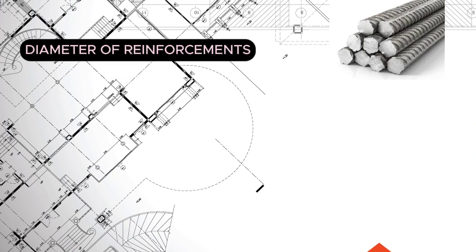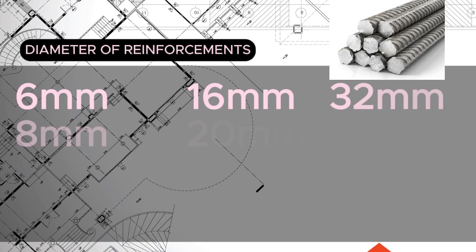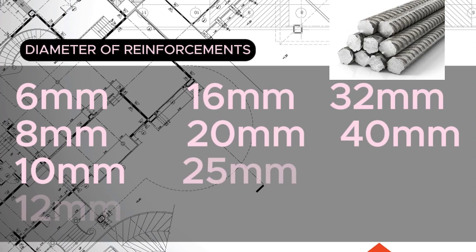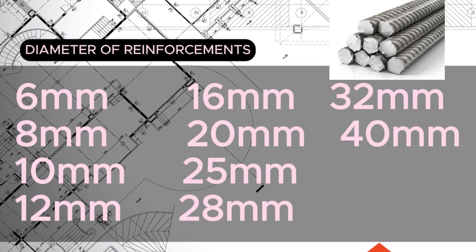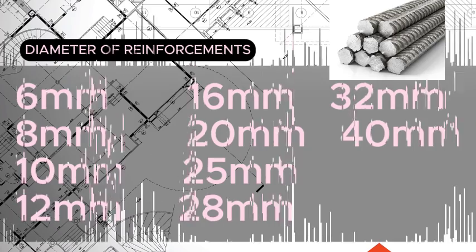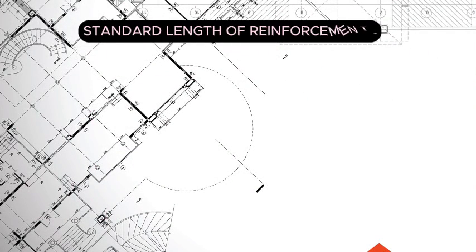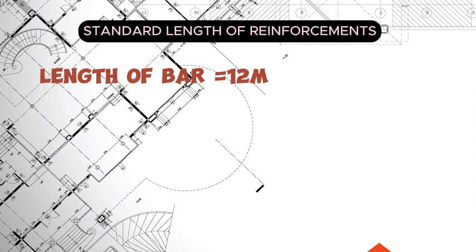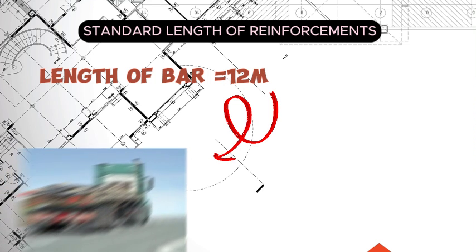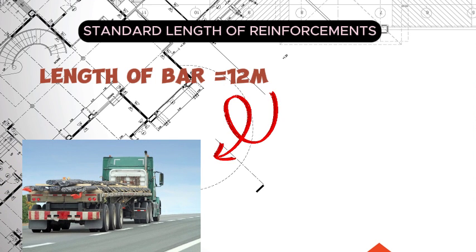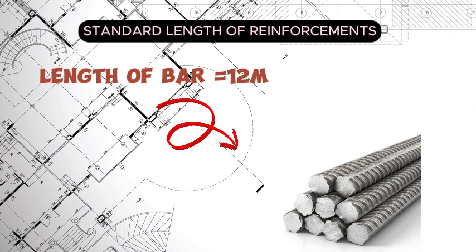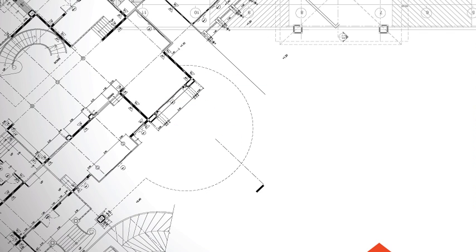There are various diameters of reinforcement used in construction: 6 mm, 8 mm, 10 mm, 12 mm, 16 mm, 20 mm, 25 mm, 28 mm, 32 mm, and 40 mm. We also have some reinforcement that are customized for particular projects. The standard length of reinforcement for construction is usually 12 meters, which is primarily for convenient transportation to site and for customized lengths for particular schedules.